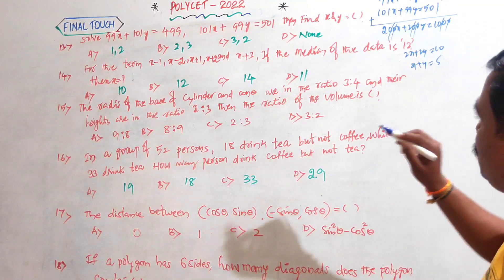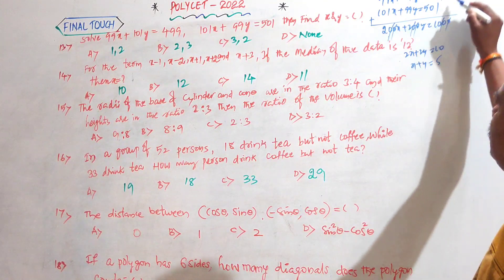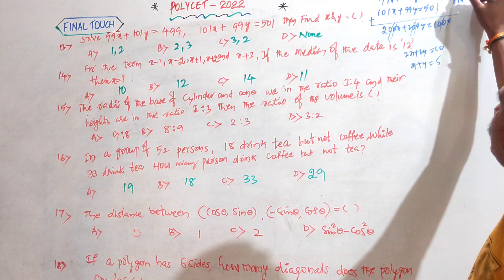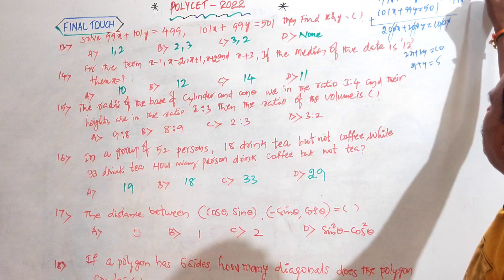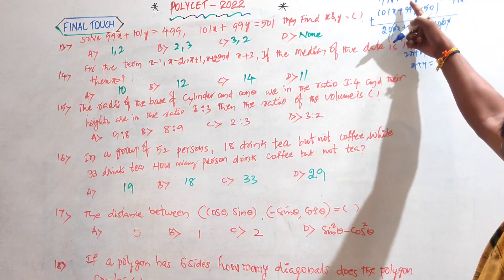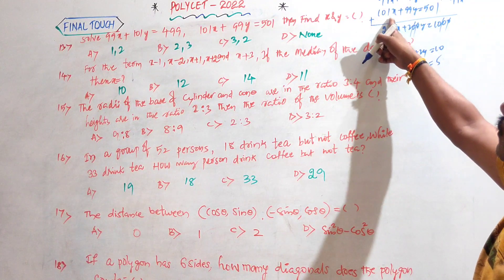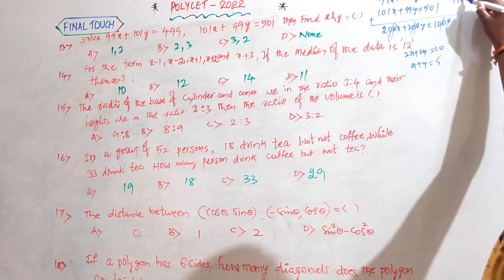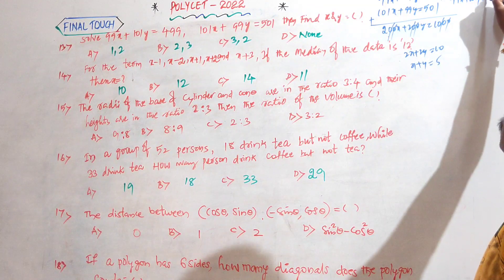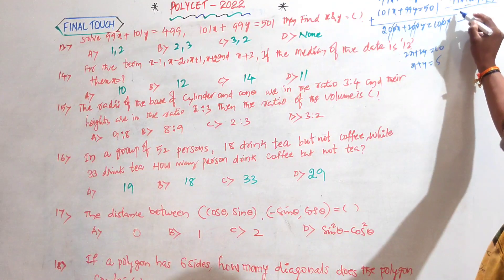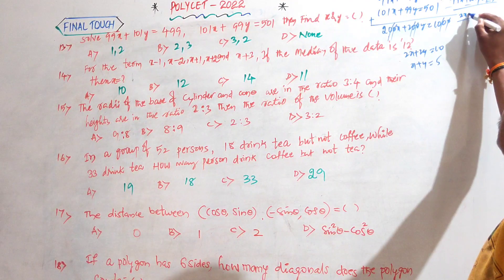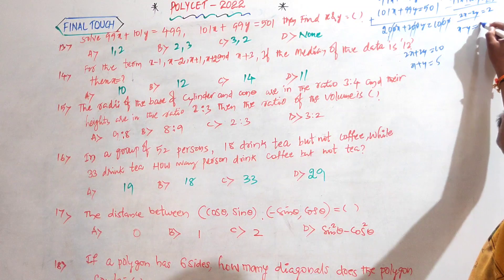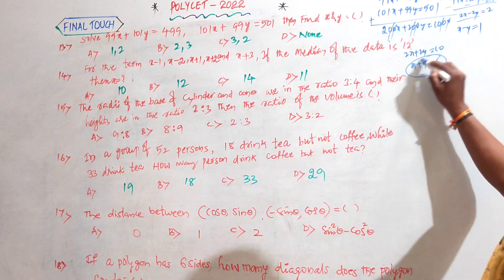Now we are adding and subtracting. If we subtract: 101x + 99y = 501 is written on top because its coefficient is larger. Subtracting gives us negative terms: 2x - 2y = 2, so x - y = 1.